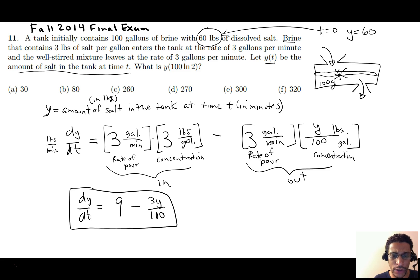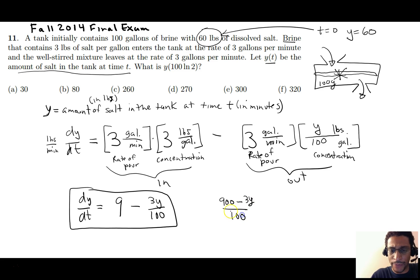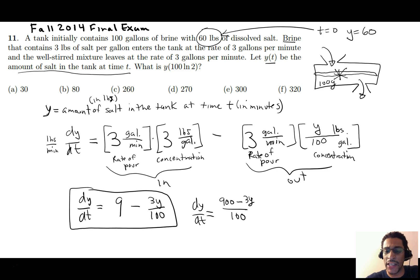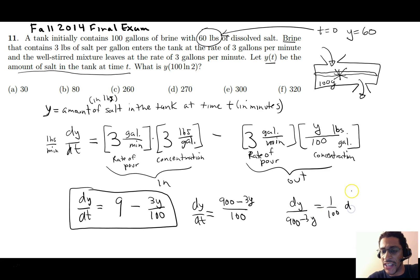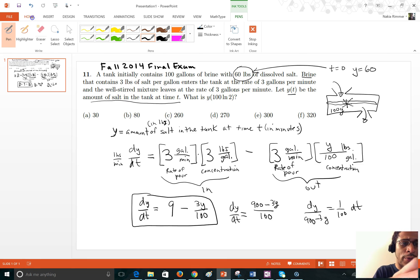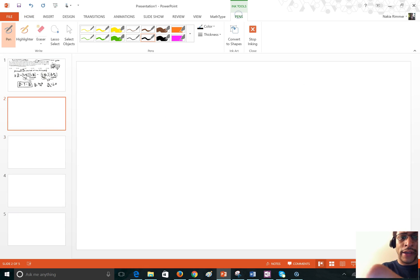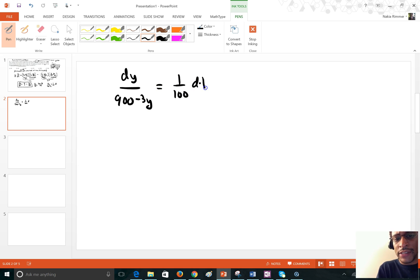We can set this up as separable, which is easier. Multiplying through, it becomes dy/(900 − 3Y) = (1/100) dt. Moving to the next slide, we have dy/(900 − 3Y) = (1/100) dt, ready to solve.